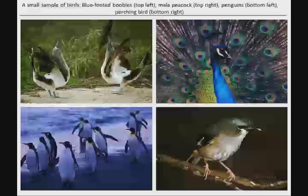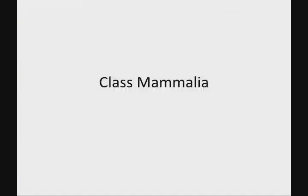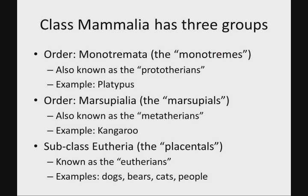That brings us to our last class of the chordates: class Mammalia. We're going to break this down into three subgroups. There's order Monotremata — the monotremes, also known as prototherians; the platypus is an example; these are the egg-laying mammals. There's order Marsupialia — the marsupials, also known as metatherians; the kangaroo is an example; these are the pouched mammals that carry their babies in a pouch as they develop. And finally, the eutherians, the placentals — cats, bears, dogs, people — all eutherians.